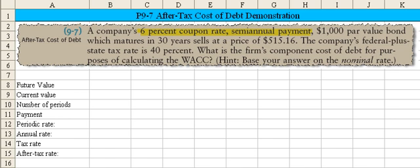The company's federal plus state tax rate is 40%, and we are asked to determine the firm's component cost of debt for purposes of calculating the weighted average cost of capital. They tell us to base the answer on the nominal rate.